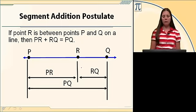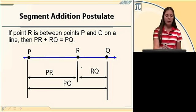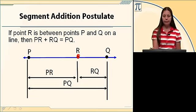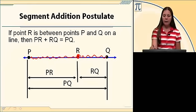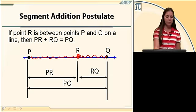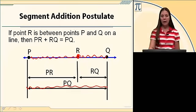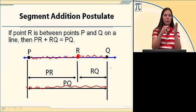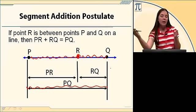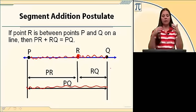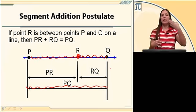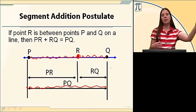If a point R is between points P and Q on a number line, then PR plus RQ equals PQ. This says you can find the distance from P to R and from R to Q and add those two numbers together to get the distance from P all the way to Q. You might use this on a map: it gives you the distance between two cities, but you want to travel through another city, so you add the two distances together.